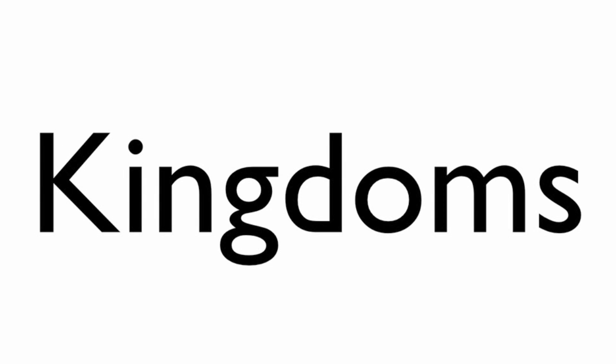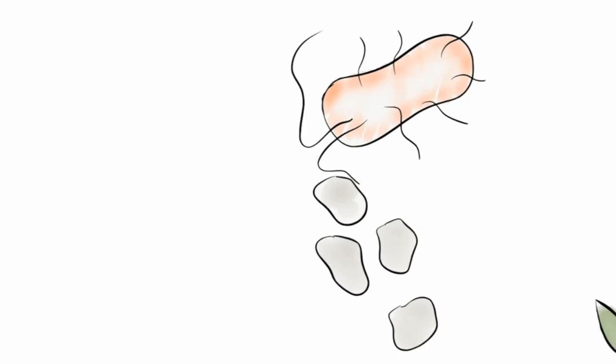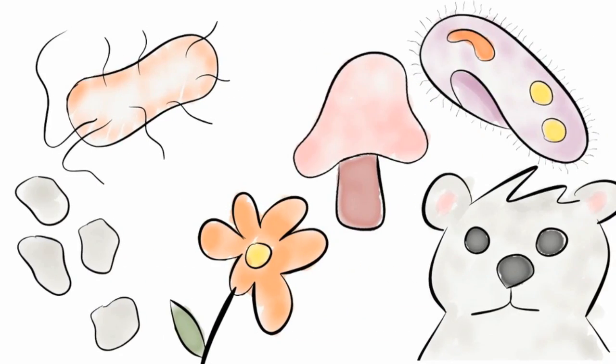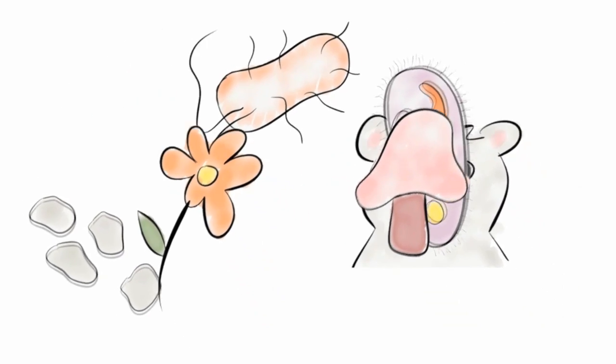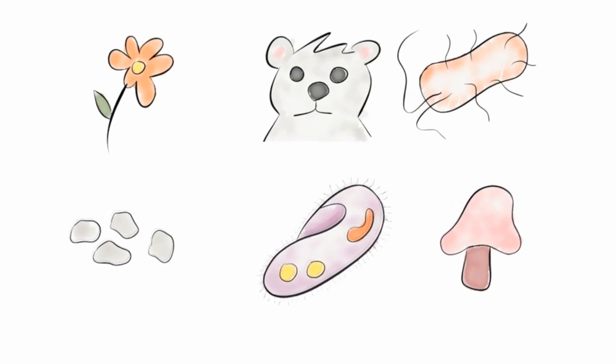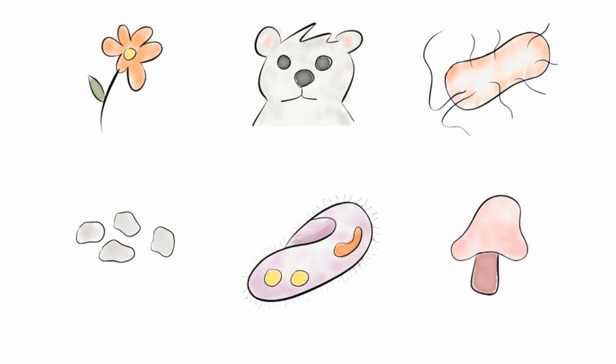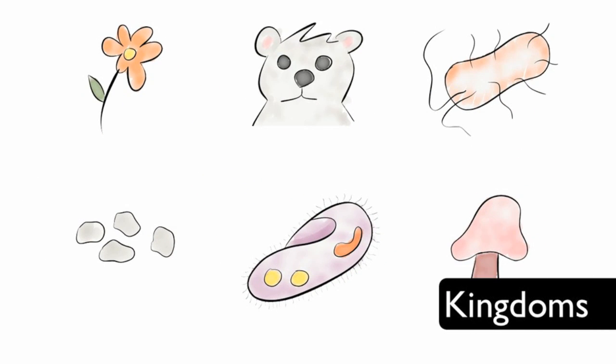Kingdoms. All life on Earth can be placed into one of six groups based on similarities. The groups are called kingdoms.